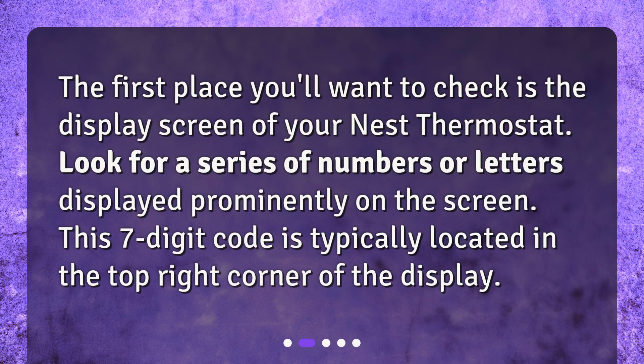The first place you'll want to check is the display screen of your Nest thermostat. Look for a series of numbers or letters displayed prominently on the screen. This seven digit code is typically located in the top right corner of the display.